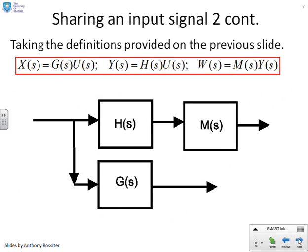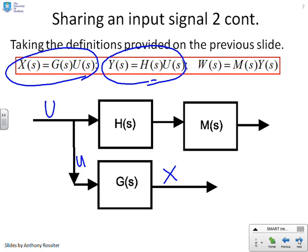So here's the answer. You'll notice that if I take X equals GU, then the input signal is U, which means I've also got U down here, which means that this bit of the diagram, U represents a line going into G, and X comes out. So that's the easy bit. What about the next one, Y equals HU? Well, I've got U going into H, and out comes Y. So that's that bit there. I've then got Y going into M, and out comes W.